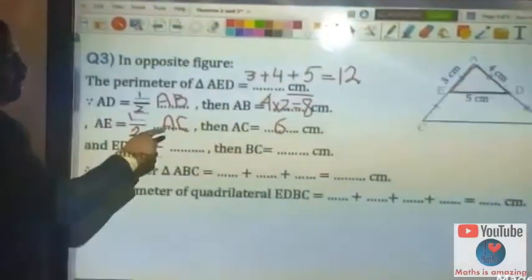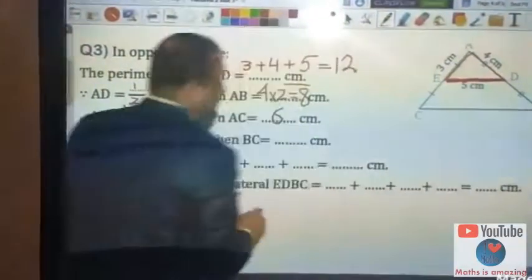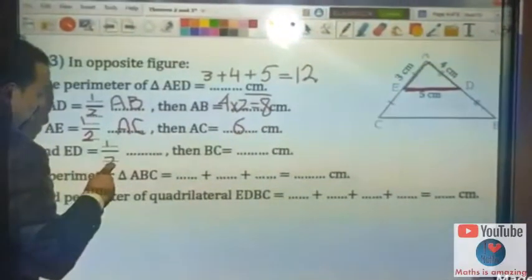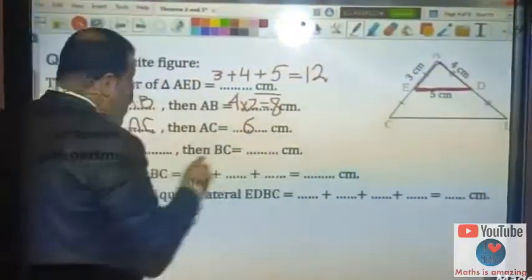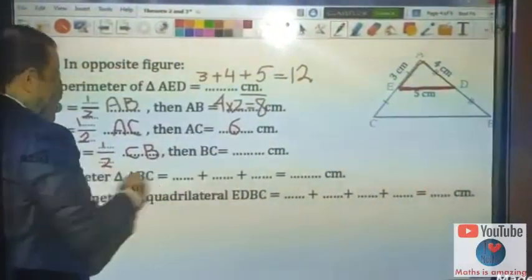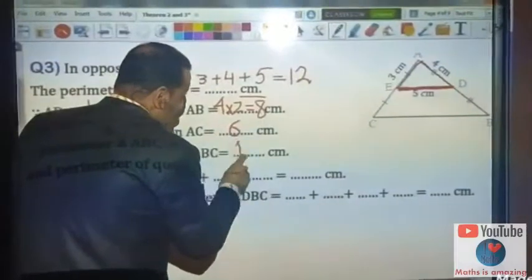And ED, the line segment joining between two midpoints, is half of the third side BC. Then BC equals 5 times 2 equals 10 cm.